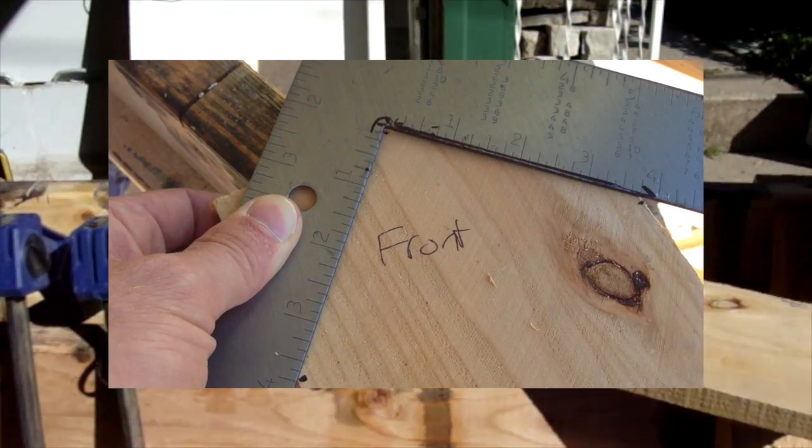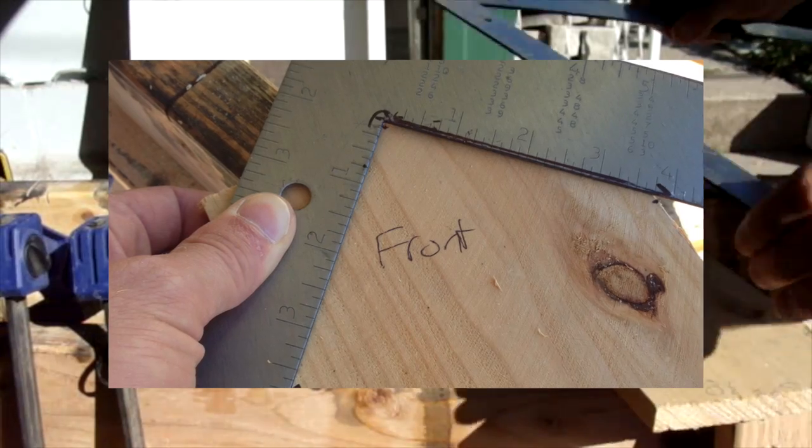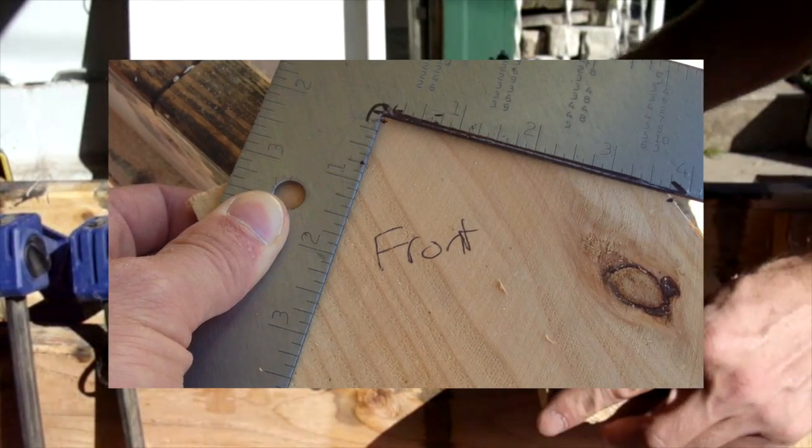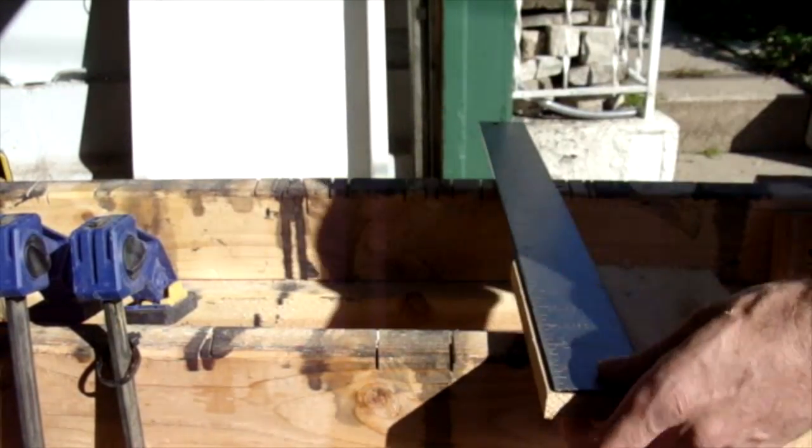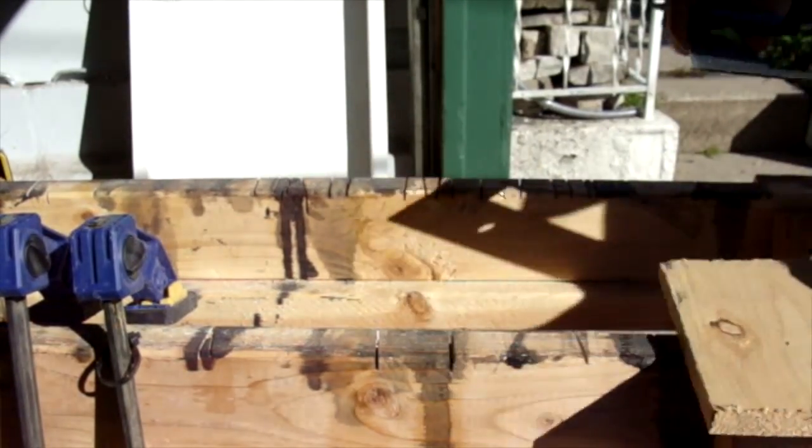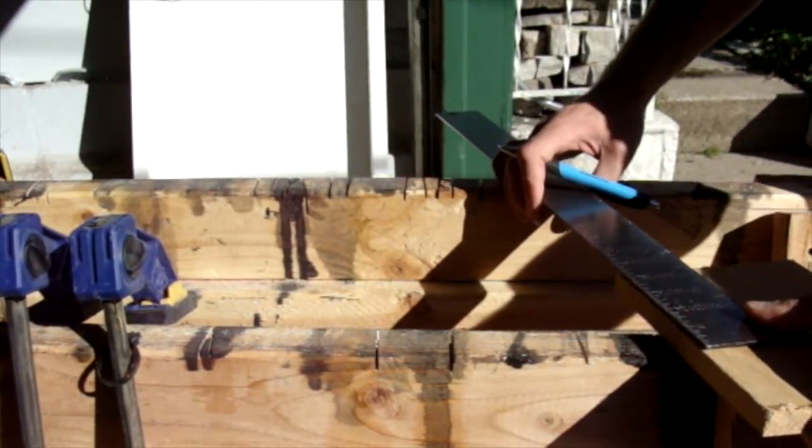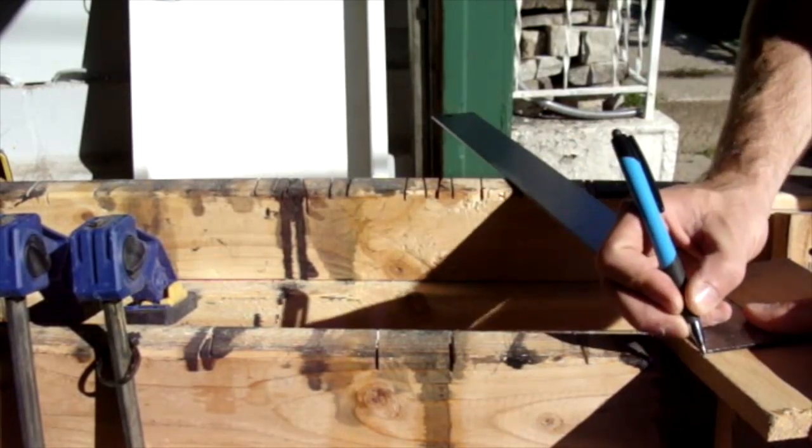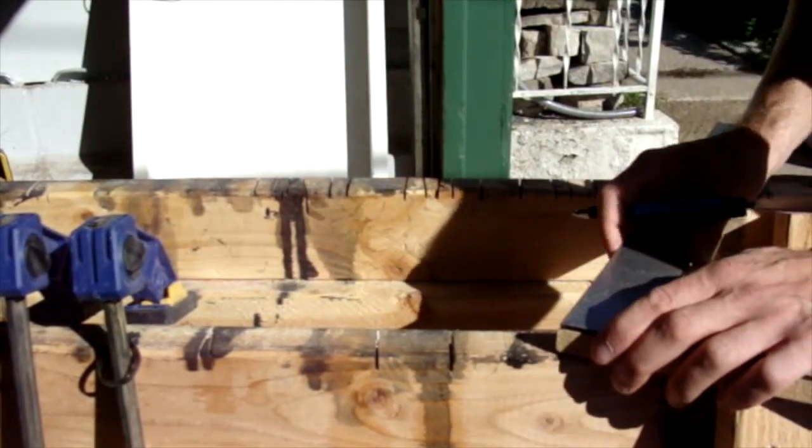Now we need to cut the front side and the back side to the shape of a house. So measure up 4½ inches on both sides of the front side. Then find the middle of the top of the front side.